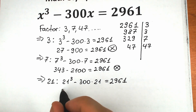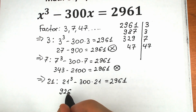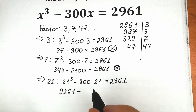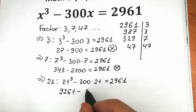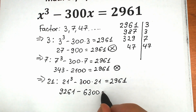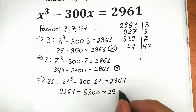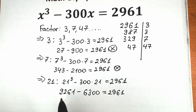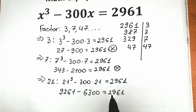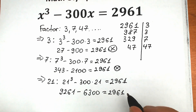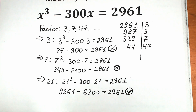21 cubed equals 9,261. And 300 times 21 equals 6,300. So 9,261 minus 6,300 equals 2,961. This is a correct case! So x equals 21 is a great factor.